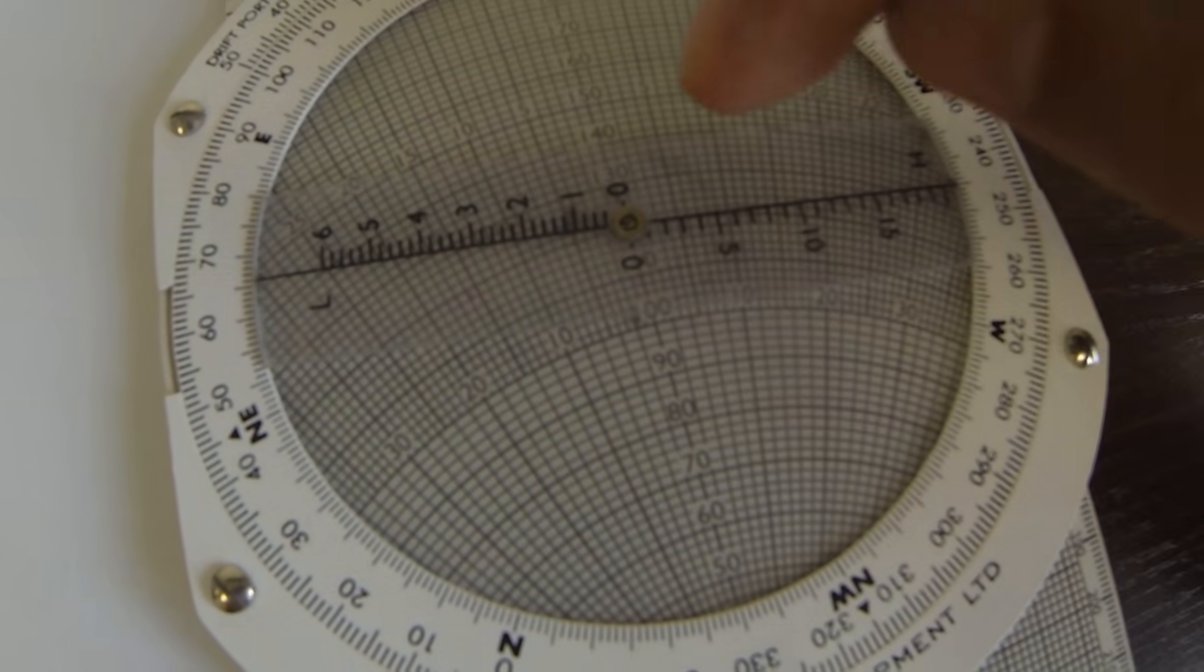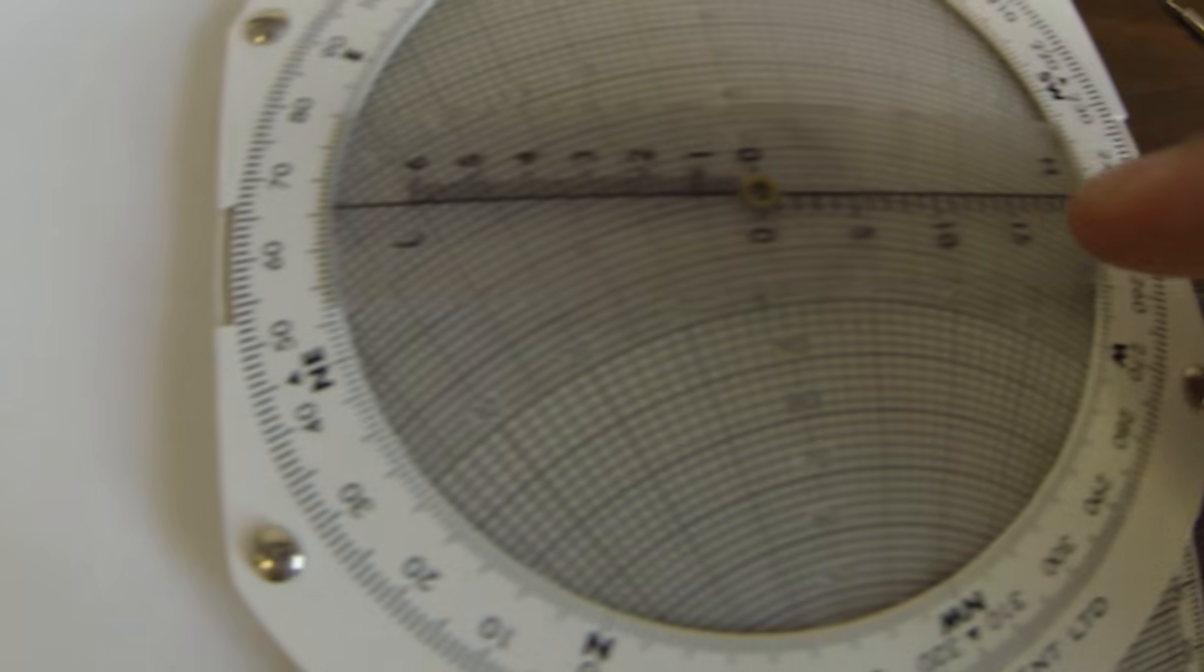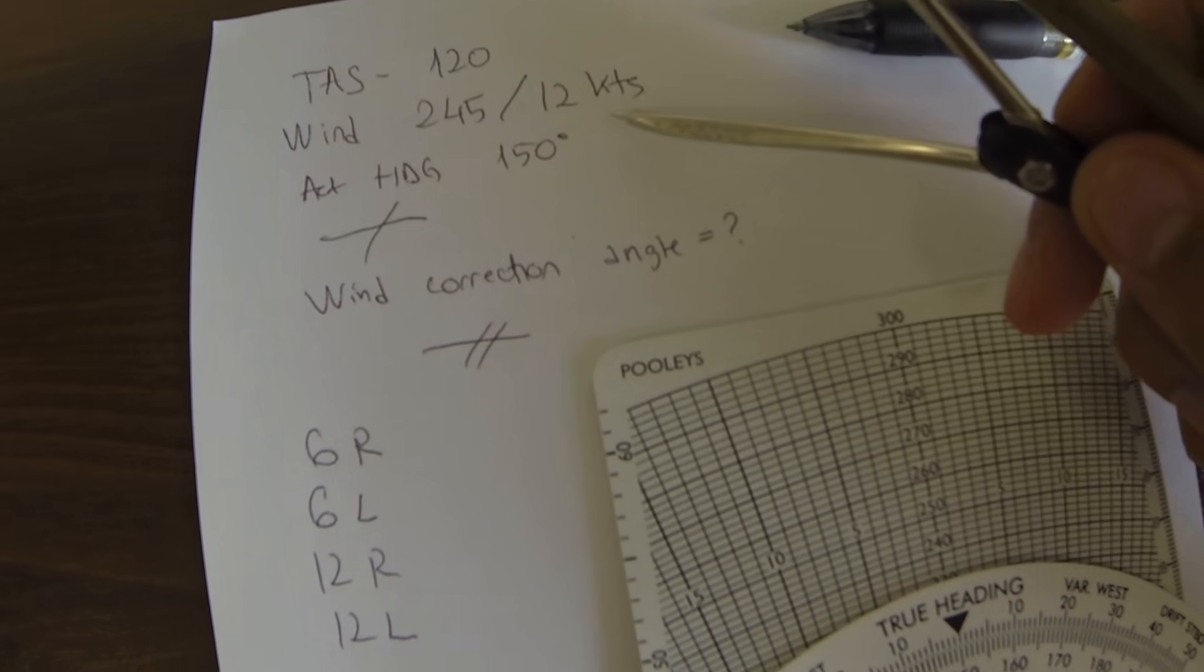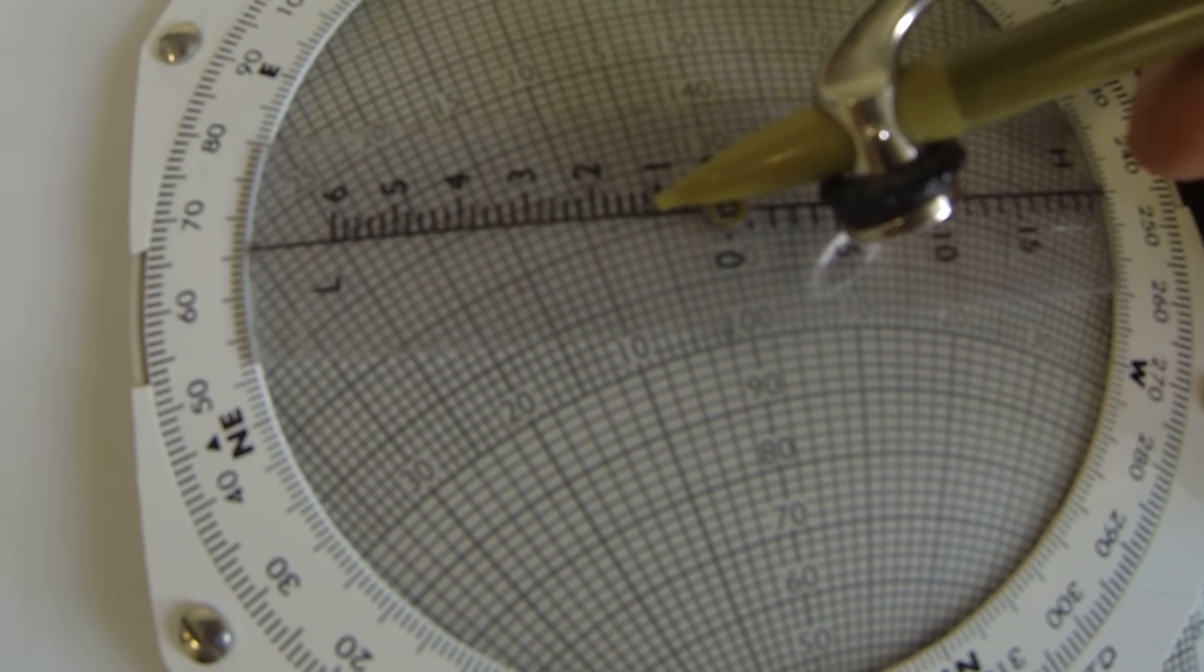And we're using this one for the low winds and this is for the high winds. So basically we're using the one for low winds. The wind is 12 knots, so we go here.